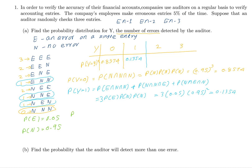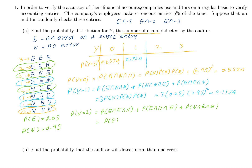Probability of y equals 2 means two errors. There are again three simple events: EEN, ENE, and NEE. Since the entries are independent, each term is probability of E times E times N. All three are equal, so we multiply by 3: that is 3 times 0.05 squared times 0.95, which equals 0.007125.